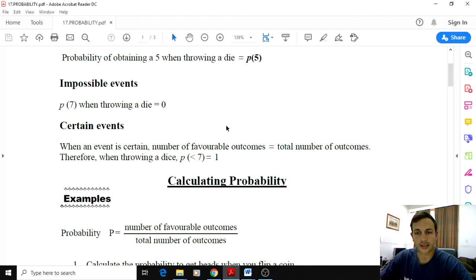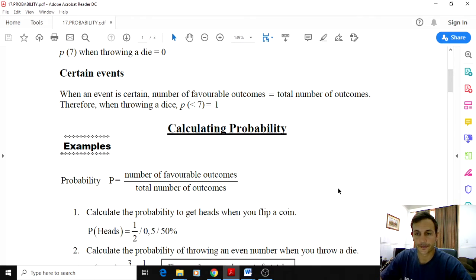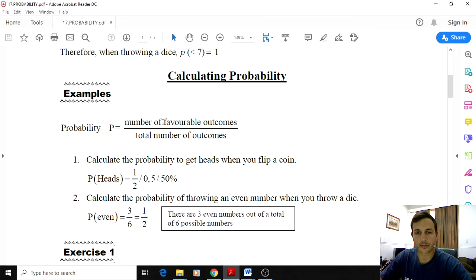Which basically how you work this out is the number of favorable outcomes divided by the number of total outcomes. So if we say what is the probability of a die landing on 5, you've got one favorable outcome because there's only one side with the 5 on, but the total number of outcomes is 6, so it's one out of six. So that's how we work it out: the number of favorable outcomes divided by the total number of outcomes.